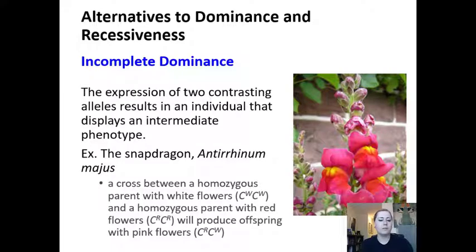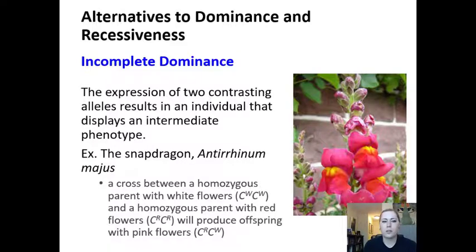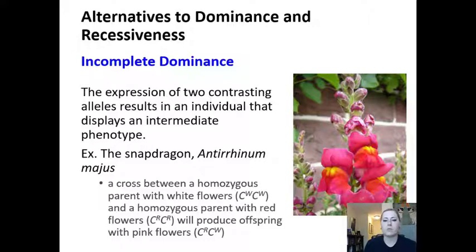Now let's talk about a few abnormalities to the typical dominance and recessive patterns. One is incomplete dominance, which occurs when the expression of two contrasting alleles results in an individual with an intermediate phenotype. A great example is the snapdragon: crossing a homozygous white flower parent with a homozygous red flower parent produces a heterozygous offspring with pink flowers — displaying neither parent's phenotype but an intermediate one.